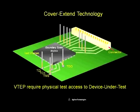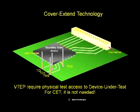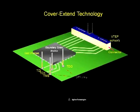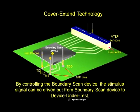The VTAP test will require physical test access to the device under test. However, for CET, these test accesses are not required. By controlling the boundary scan devices via a TAP pin, the stimulus signal can be driven out from the boundary scan device to the device under test, subsequently picked up by the VTAP sensor plate and sent to the ICT tester for analysis.